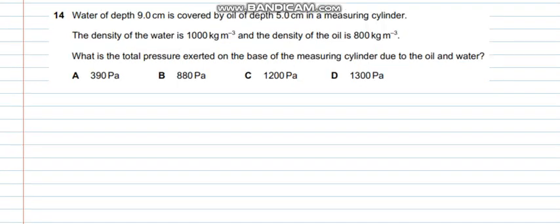The next question says that water of depth 9 cm is covered by oil of 5 cm in a measuring cylinder. The density of the water is 1000 kg/m³ and the density of oil is 800 kg/m³. What is the total pressure exerted on the base of the measuring cylinder due to the oil and water? We simply need to add up the pressures because of the densities of water and oil.